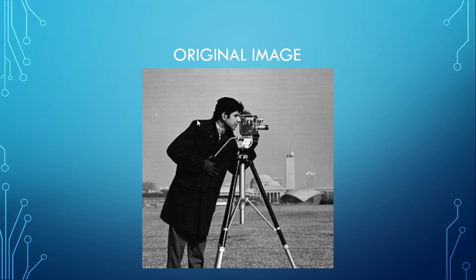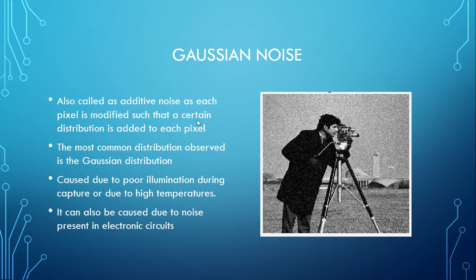This is the original image that we are going to be using across this project. Gaussian noise is also called additive noise. Each and every pixel is modified such that a certain distribution is added to it, the most common being the Gaussian distribution. It is caused due to poor illumination during capture, high temperatures, or noise present in electronic circuits.